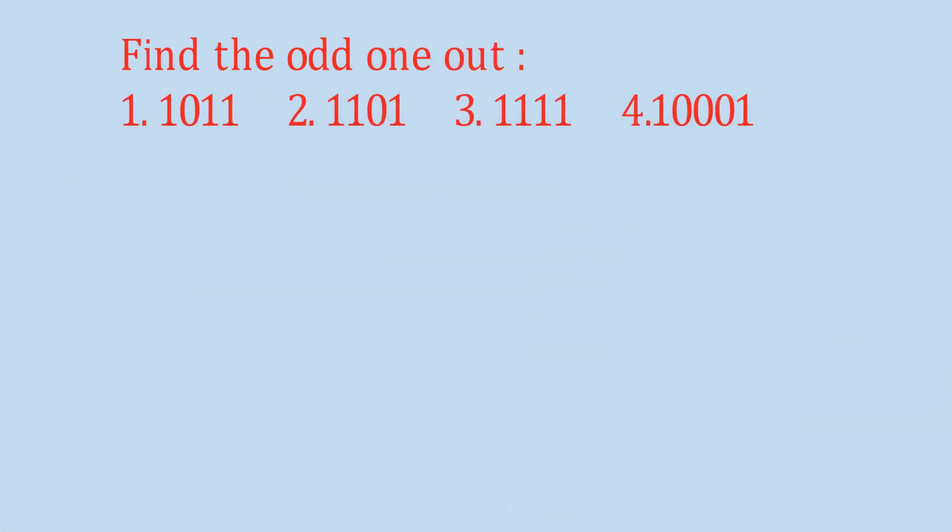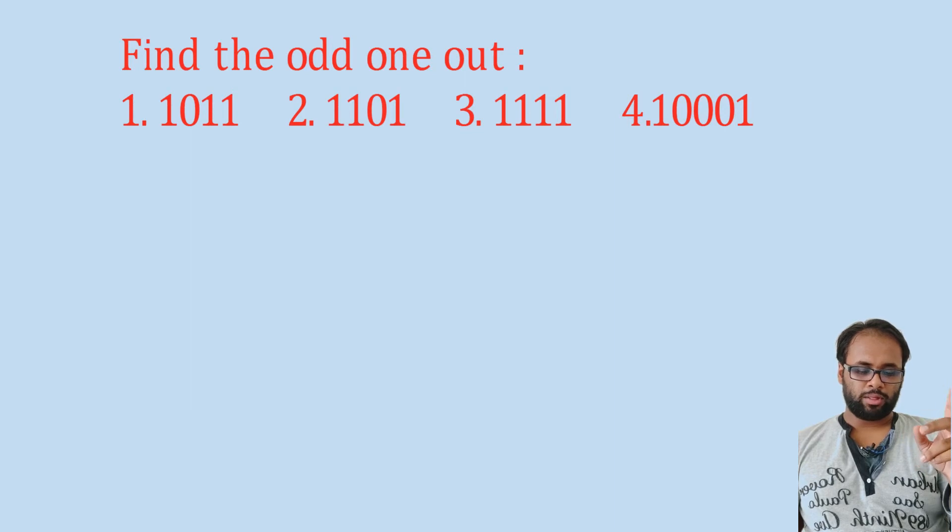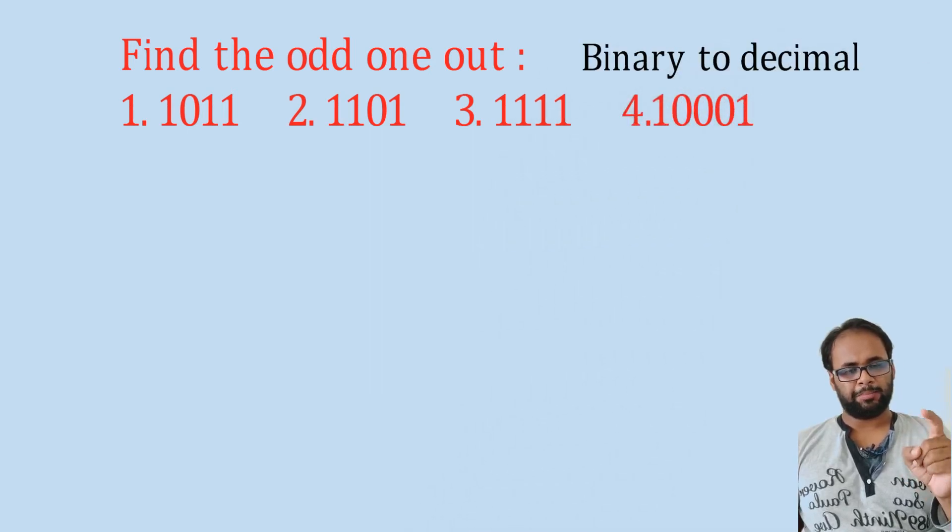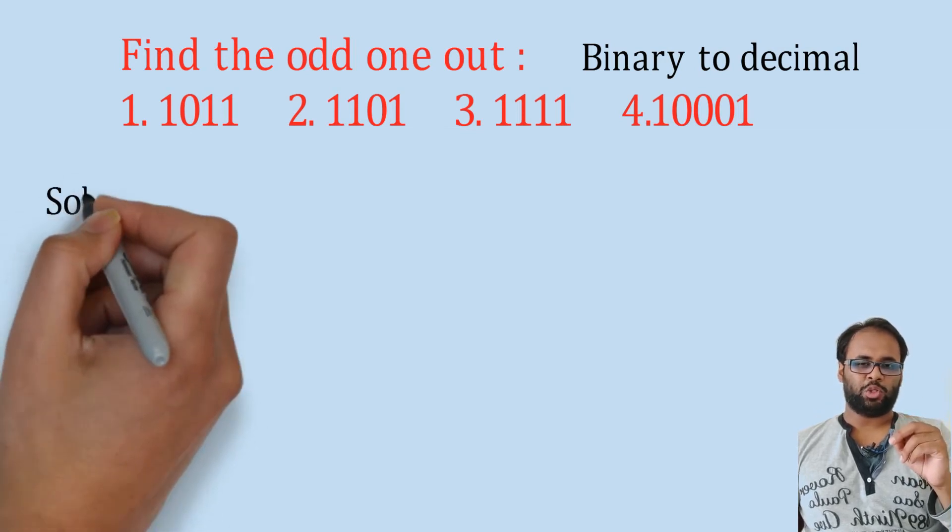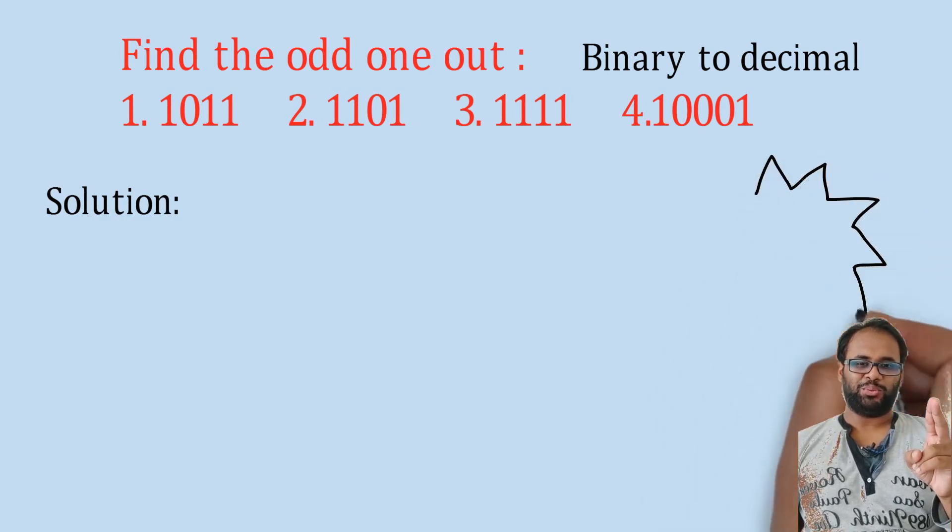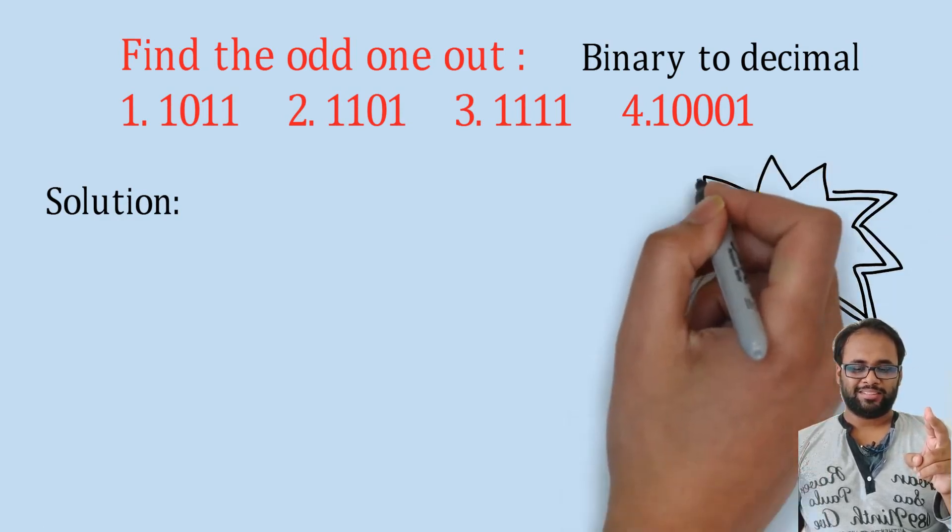Next we have find the odd one out: 1011, 1101, 1111, 10001. In case you get such a question and the number is binary, you convert that to decimal. In order to get a better understanding of binary to decimal, watch our videos on number system. But here we have a shortcut for you - that's the good news.